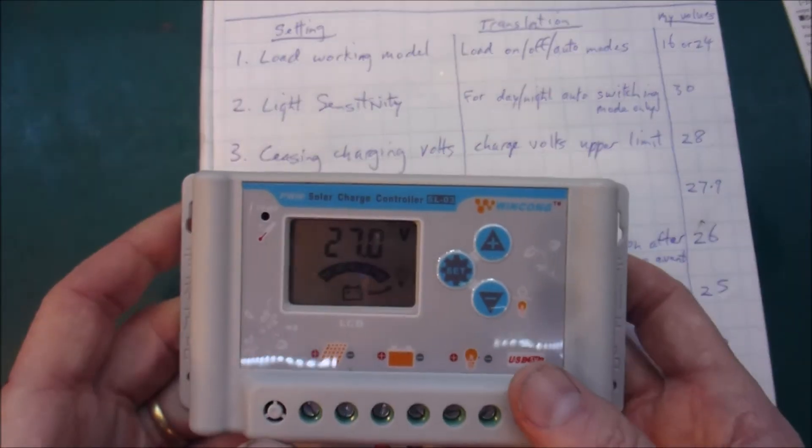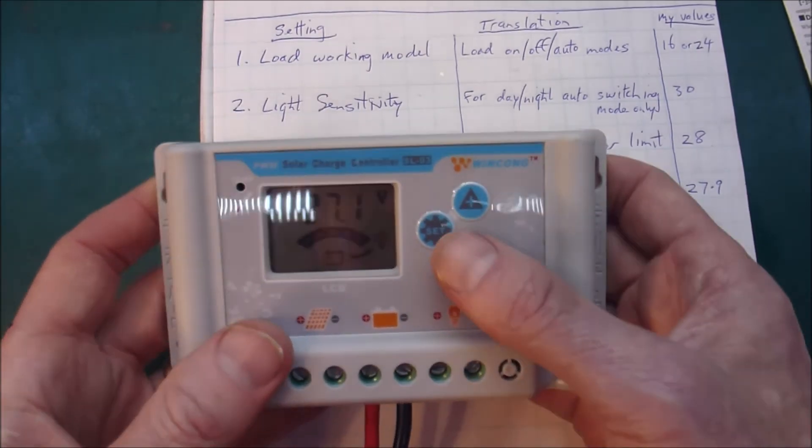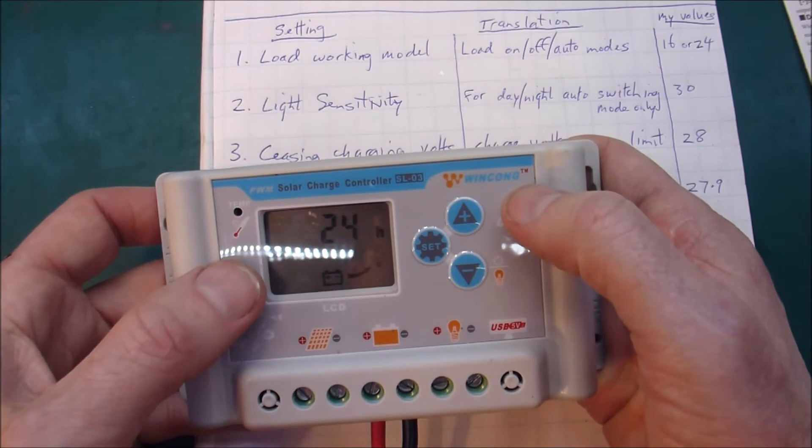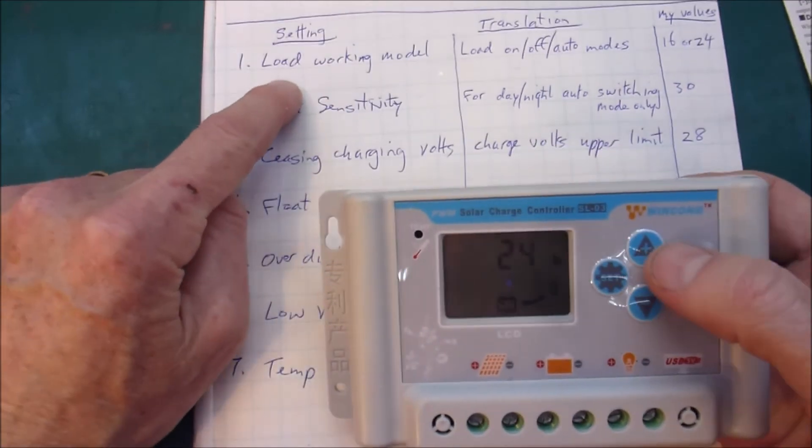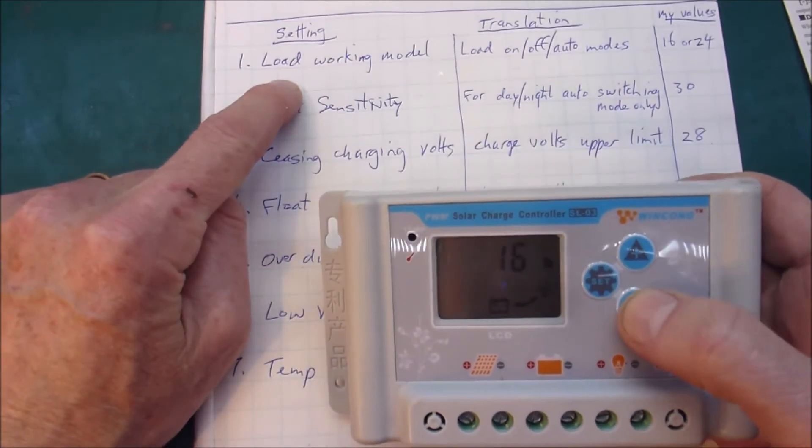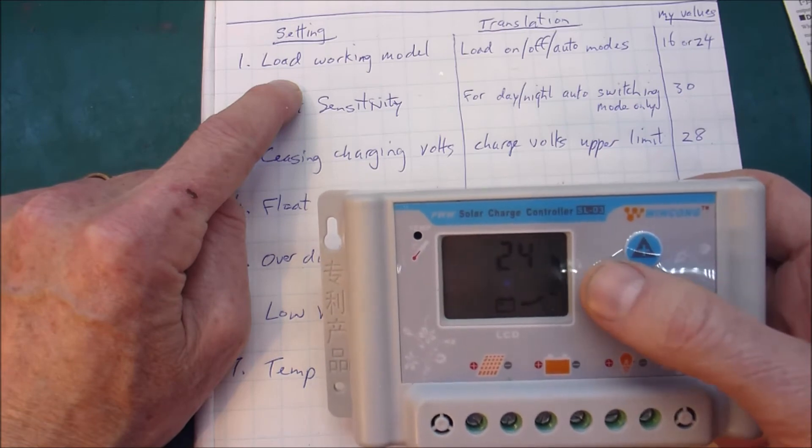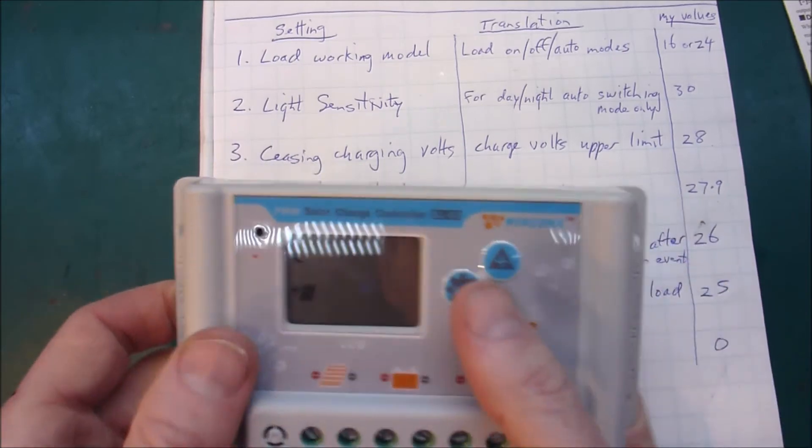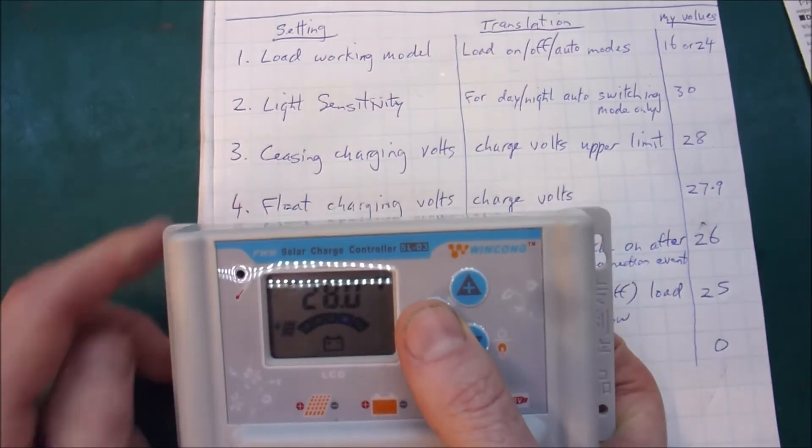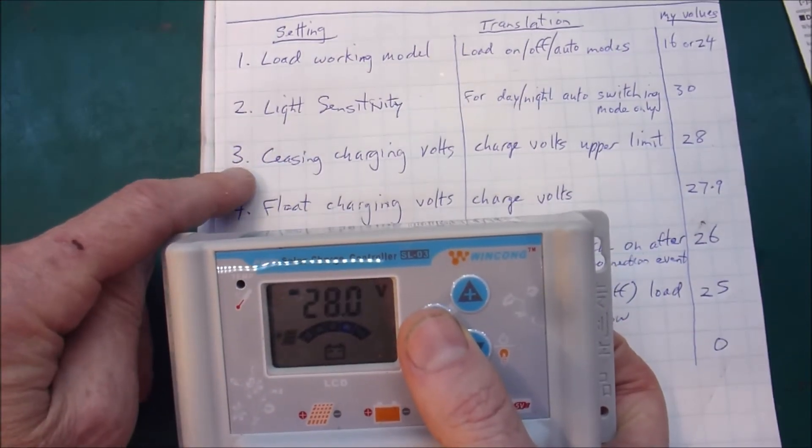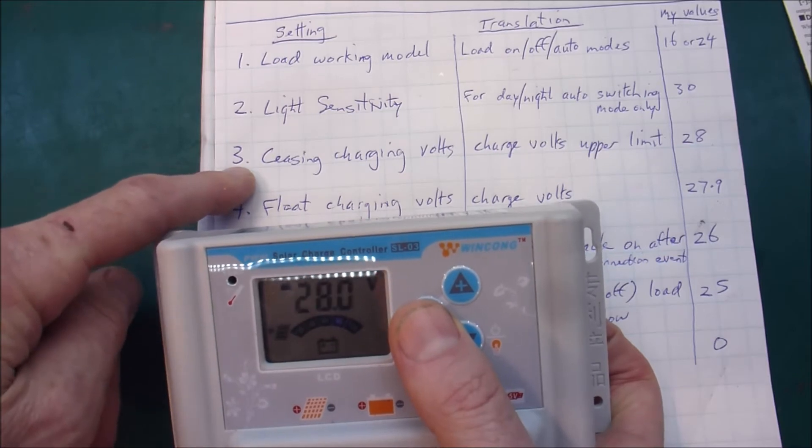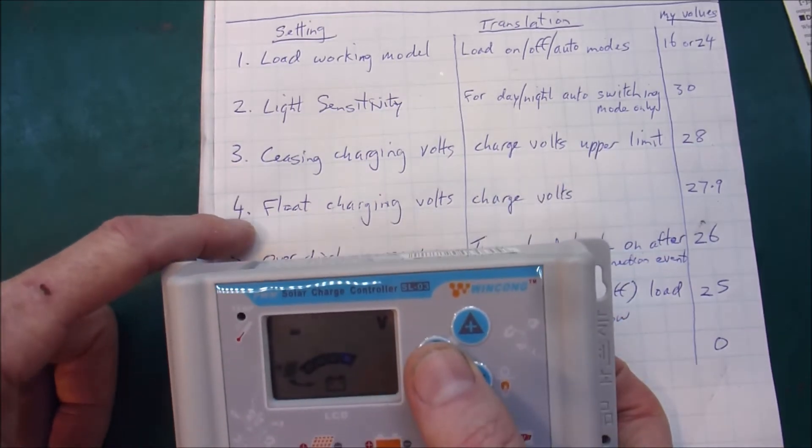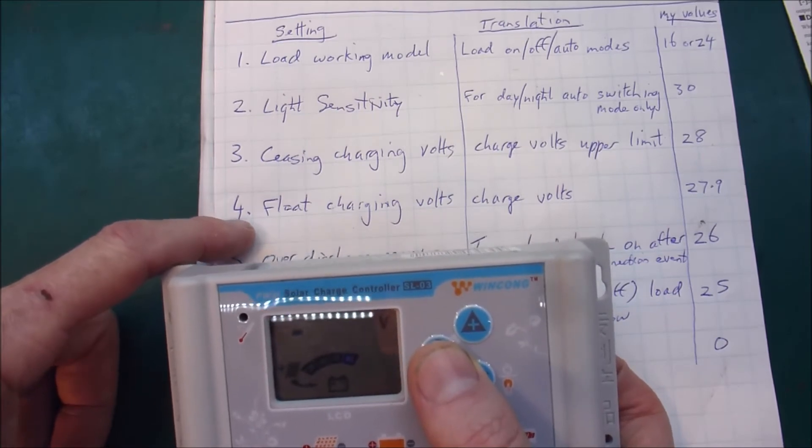And the way you physically do that is it's actually incredibly simple. Hold down the set button and you get into the various settings. So 24 and you can turn that up and down. The next one is light sensitivity, leave that at 30. Then your cease charging volts which I've got at 28. Then float volts 27.9.